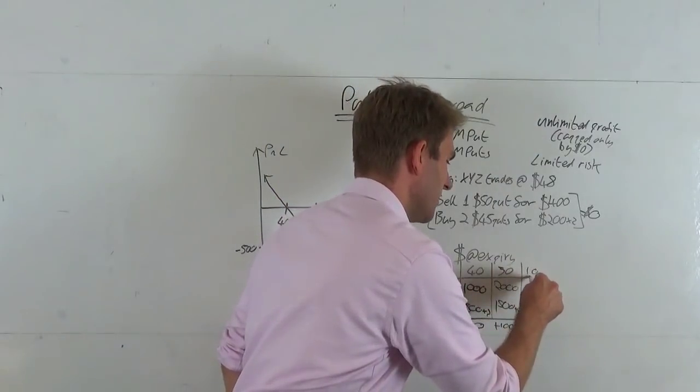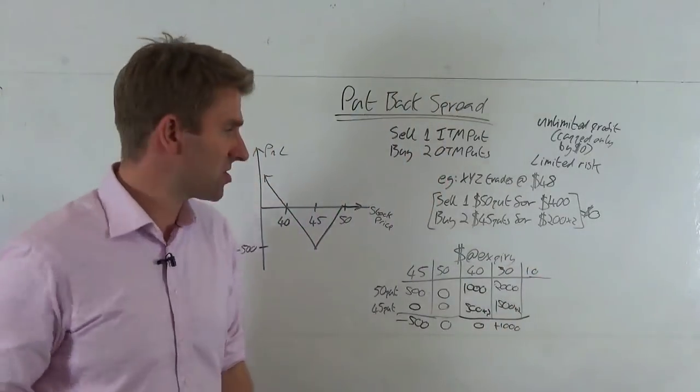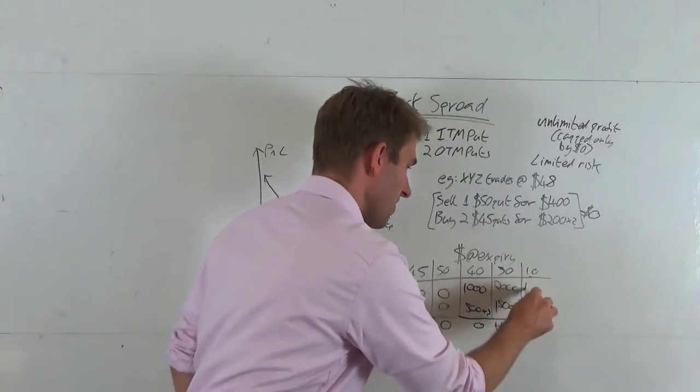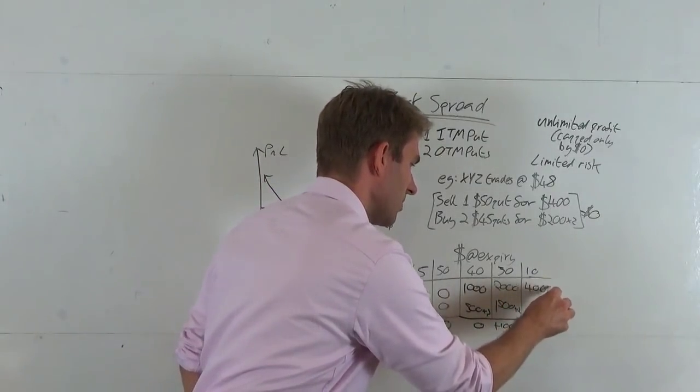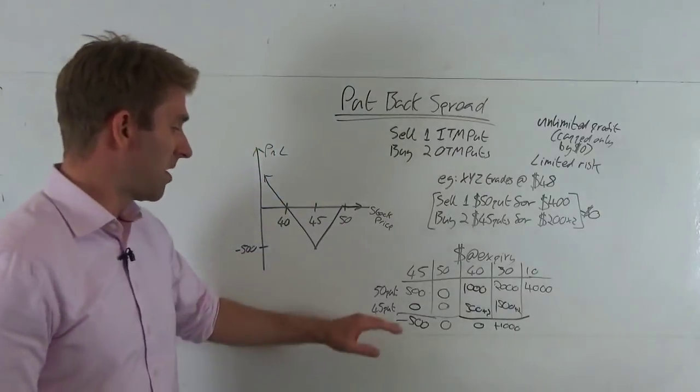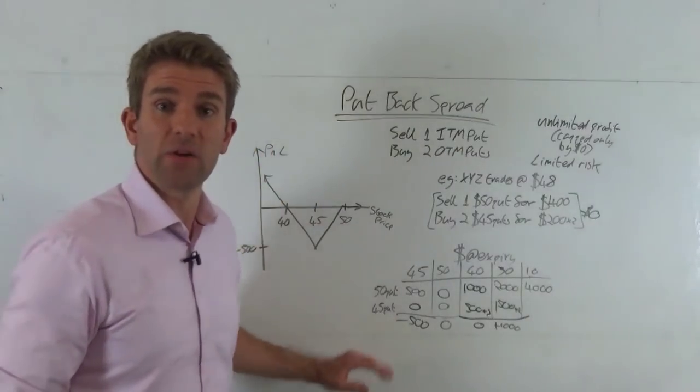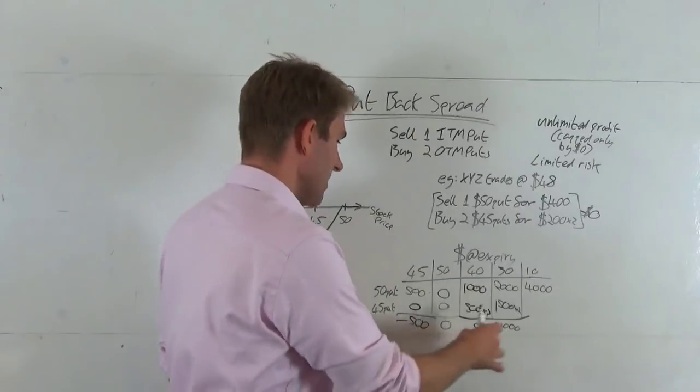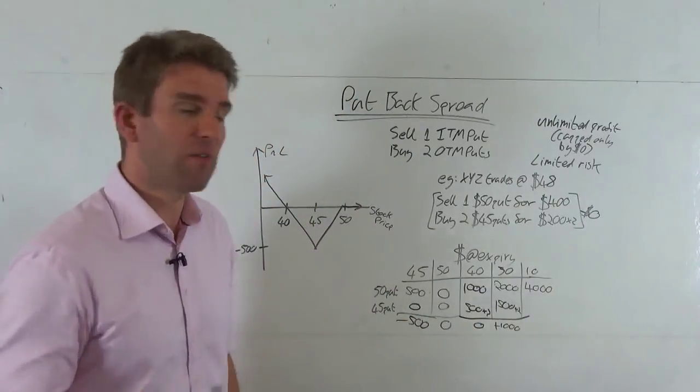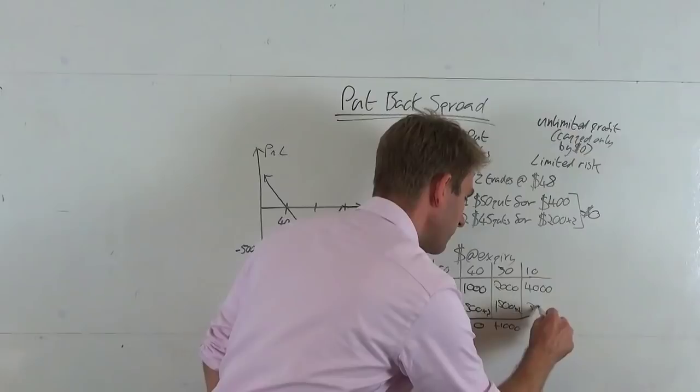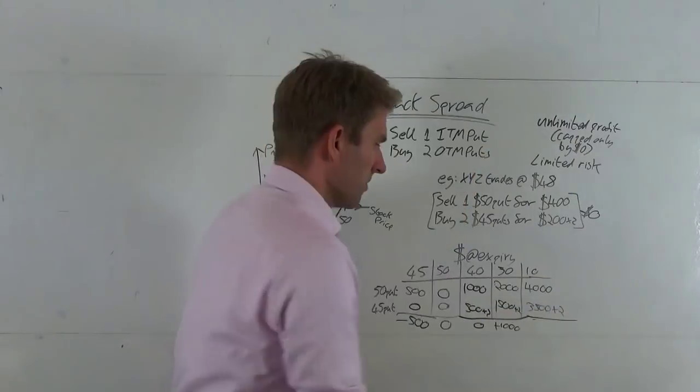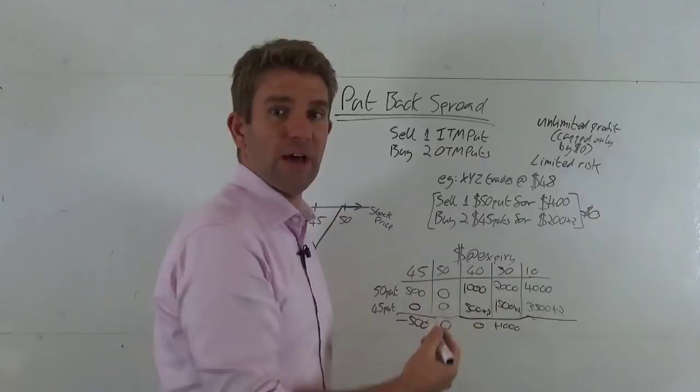Let's look at the 10 just to prove this. So let's say it really tanks low. What's the 10 going to be worth? The $50 put is going to be worth $4,000, and unfortunately we sold that one so we're on the hook for that. But the $45 put has got some good value as well, right? That's got $35 worth of value - $3,500 times the two. So that's $7,000.